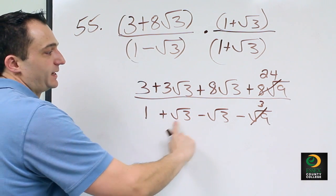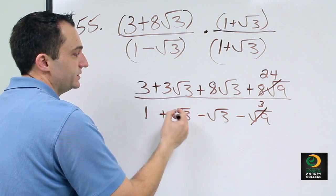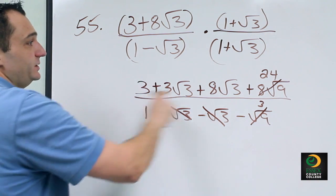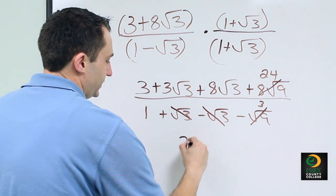On the bottom, a plus radical 3 and a minus radical 3 simply cancel each other out. So now we can do 3 plus 24 and we get 27.